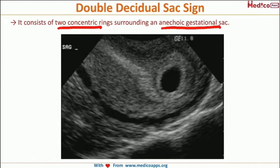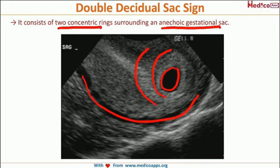In this ultrasonographic image, you can see this is an anechoic gestational sac and clearly you can see two rings being formed. This is our arcuate vessels, and these are the two rings.